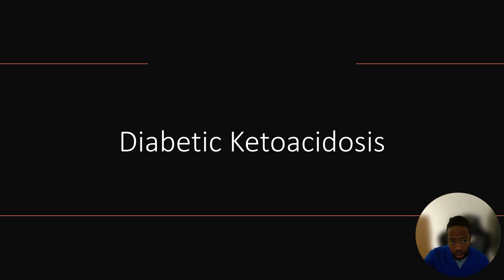Diabetic ketoacidosis, also known as DKA. DKA can occur when the body has an excess of blood sugar outside the cells due to a lack of insulin. Your body tries to compensate for this by breaking down fats to sustain itself. When fats are broken down, acids called ketones are left behind. A sudden accumulation of ketones in the blood can cause acidosis. This condition can be life-threatening if left untreated, leading to a coma and death.